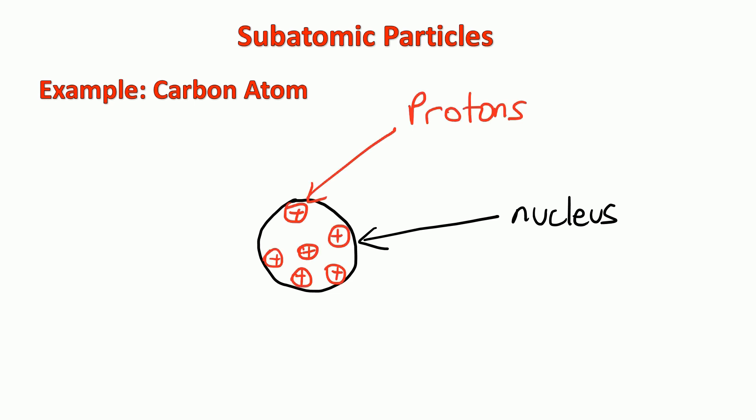We're going to be talking about subatomic particles. Don't let that term fool you - all it means is protons, neutrons, and electrons. Let's take the example of a carbon atom. We've got the nucleus in the center of the atom, and in the nucleus there are some positive protons. Also with the protons, you find neutrons in the nucleus.